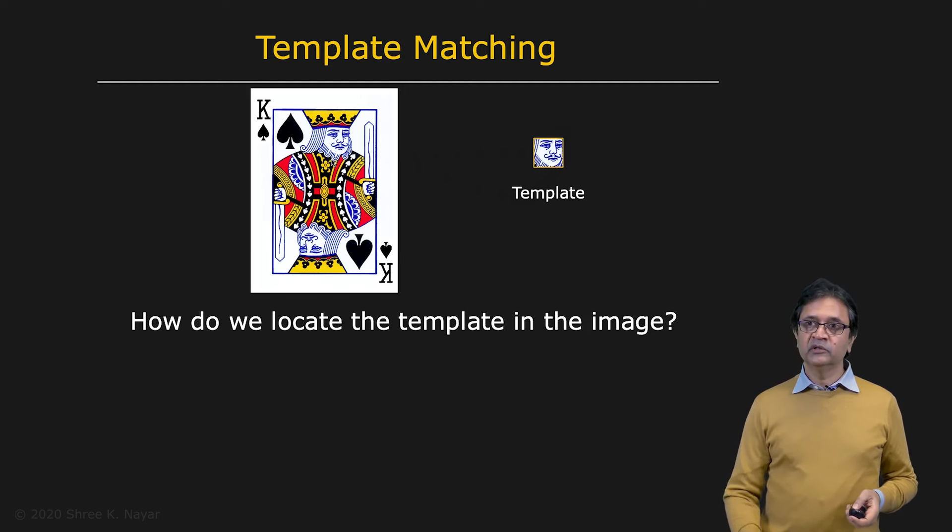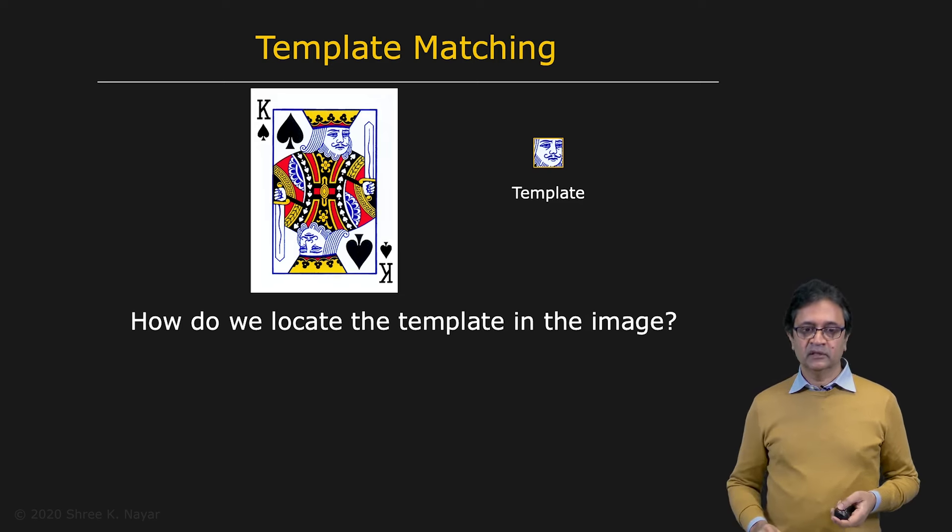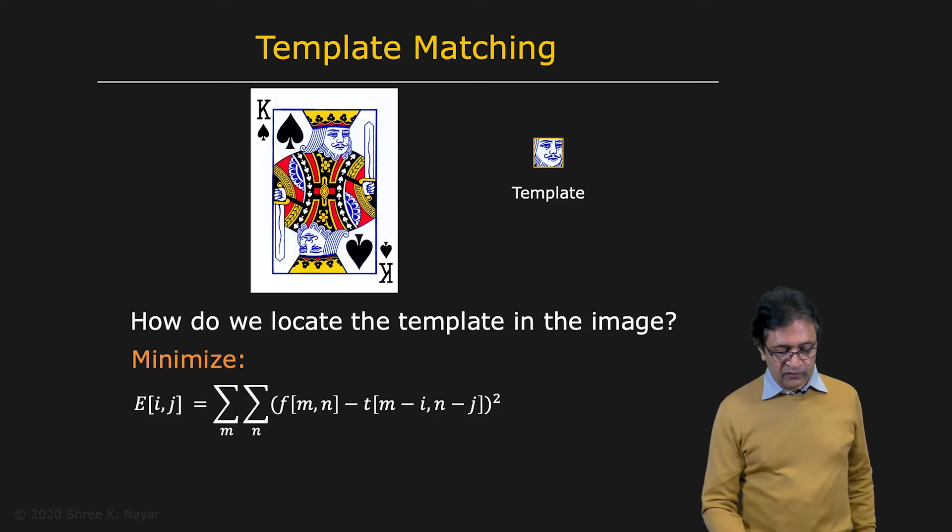One way you would do this is essentially slide the template over the image. At each point, you can find the difference between the template and the image in the overlapping region. And you can come up with a metric for that difference. Wherever that difference is really small, you're going to say you've found the template. So how do we formalize this?